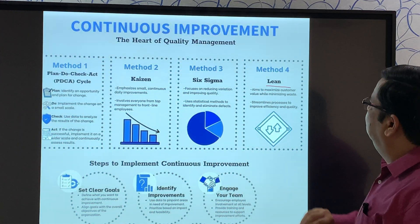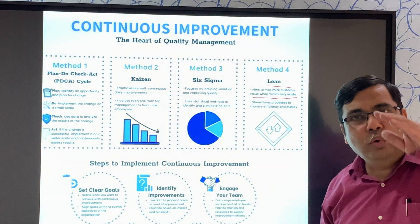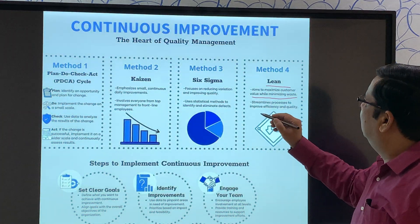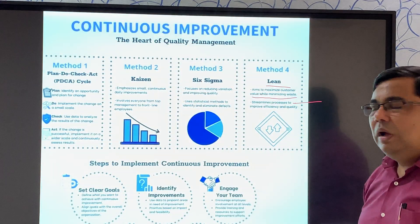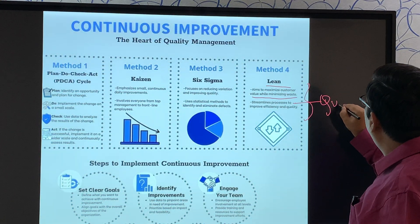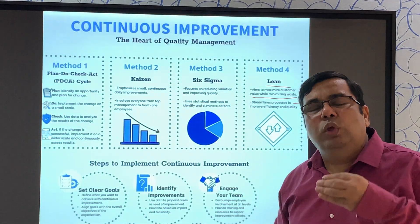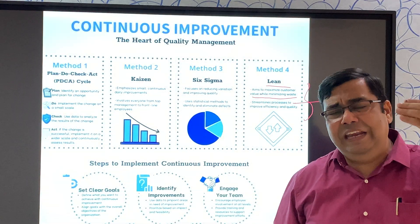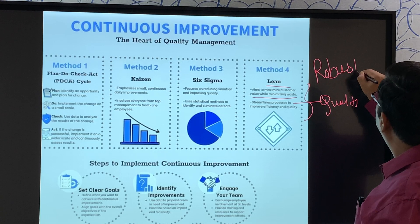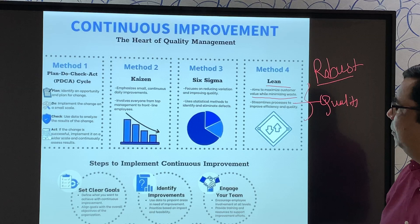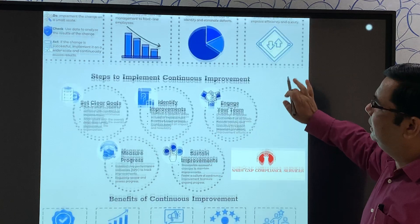The fourth method is Lean. Lean aims to maximize customer value while minimizing waste. You have to reduce waste and maximize value to the customer. Streamline the processes to improve efficiency and quality. Streamlining the process means your process — whether analytical method, cleaning method, or manufacturing method — should be robust. This is all the expectation under Lean, so that you can improve the efficiency.